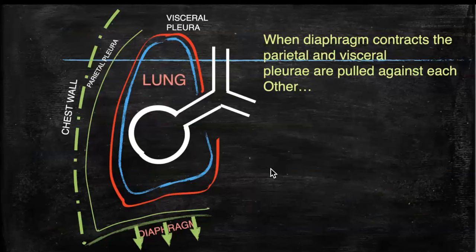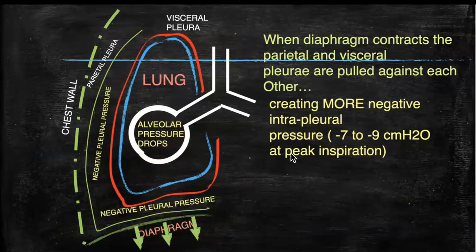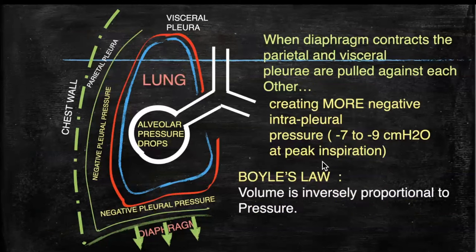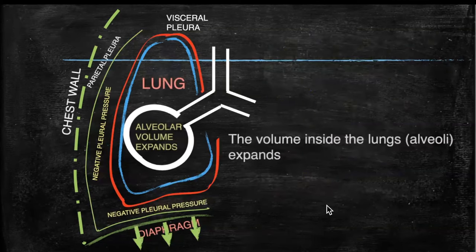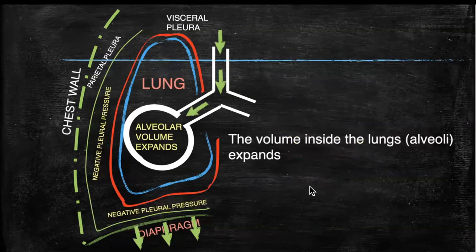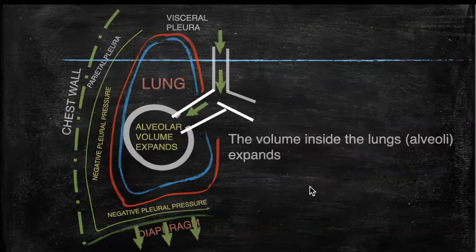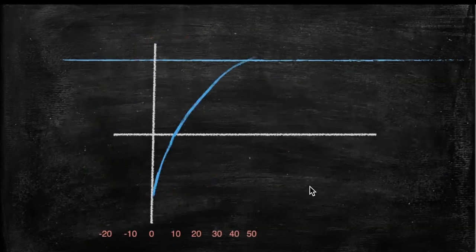During inspiration, the diaphragm contracts and pulls the parietal pleura away from the visceral pleura, and at the peak of inspiration generally this negativity goes up to minus 7 to minus 9 centimeters of water. As per Boyle's law, when the pressure drops, the volume is inversely proportional, so volume expands, leading to entrainment of air inside the alveoli and inspiration.